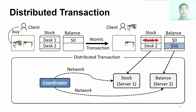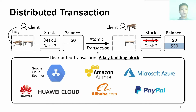When the data are stored in different servers, the transaction becomes distributed since we need to atomically operate data across multiple servers through the network. In general, a coordinator is leveraged to process a distributed transaction. Due to the atomicity and strong consistency guarantees, the distributed transaction becomes a key building block in many systems.